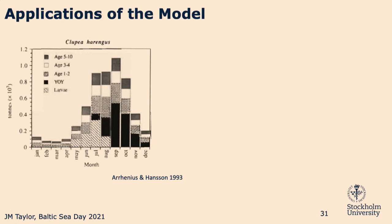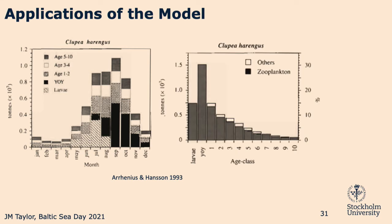An ecological application of this model: Arrhenius and Hansen used the first bioenergetics model to figure out how much zooplankton herring consumed in the Baltic Sea. The month is on the x-axis, consumption in tons on the y-axis, and there's quite a bit of consumption. Broken down by age classes, at peak consumption periods the consumption is dominated by age zero herring — less than a year old. Young-of-year herring account for one-third of the total consumption of all zooplankton production in the Baltic Sea based on this old model.